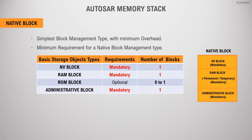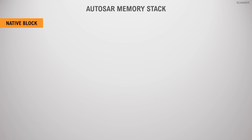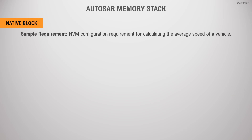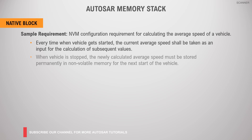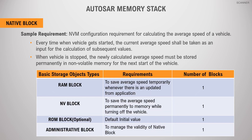As an example, we will try to understand the NVM configuration requirement for calculating the average speed of a vehicle. Every time the vehicle gets started, the current average speed shall be taken as an input for the calculation of subsequent values. When a vehicle is stopped, the newly calculated average speed must be stored permanently in non-volatile memory for the next start. To satisfy this requirement, there must be one RAM block to store the average speed value temporarily during runtime, and one NV block to save the average calculated value permanently in non-volatile memory for the next start of the vehicle.